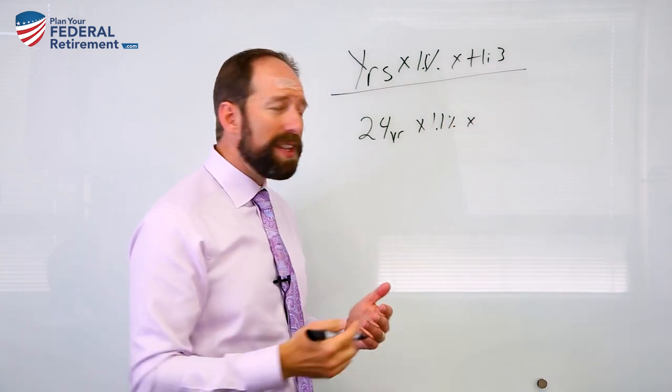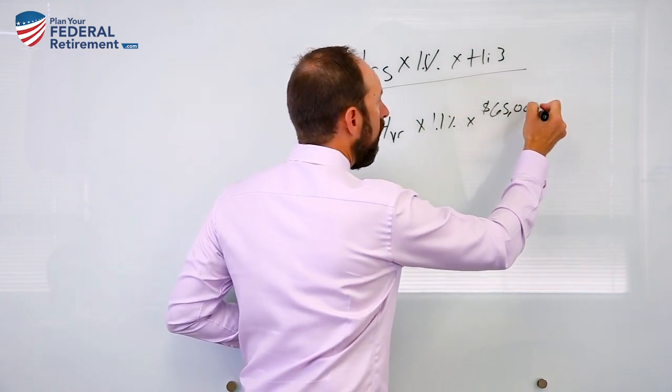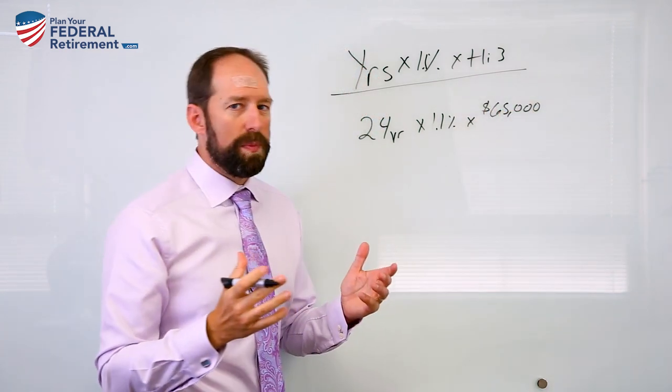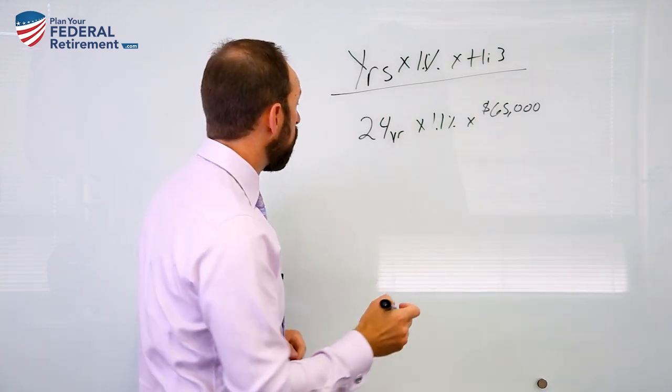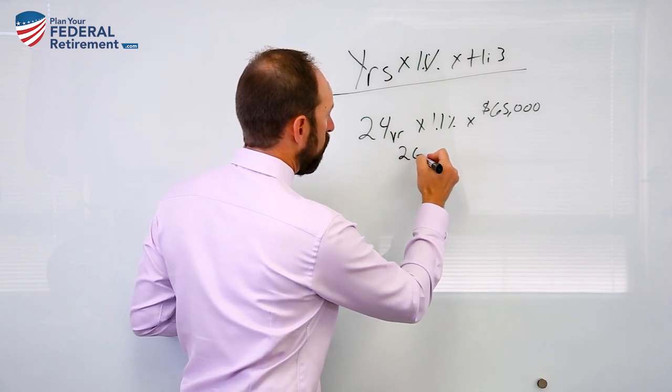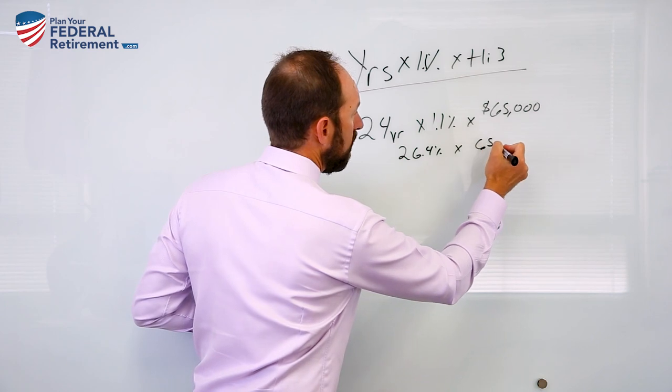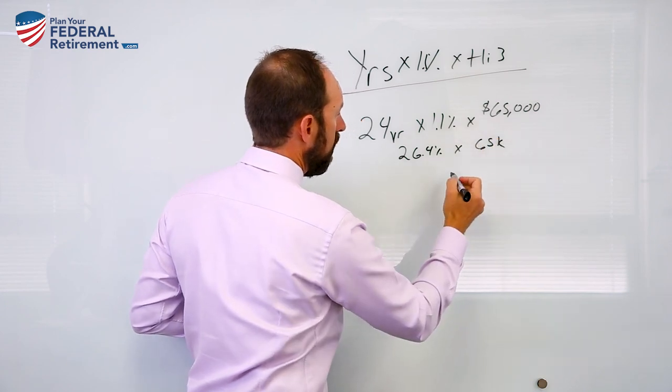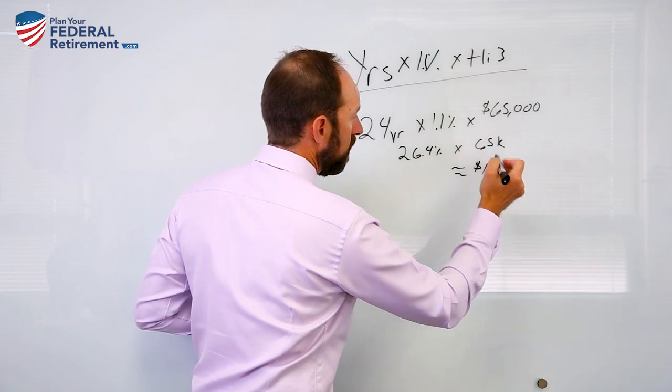I don't have his high three. I'm going to go with the number of $65,000 a year as a high three. Again, this is just a bit of a swag trying to put some stuff together. So if we run through this math real quick, 24 times 1.1, that's 26.4% times his high three of $65,000 a year. That's going to equal $17,160.